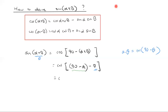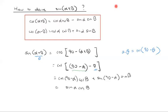This gives us cosine of 90 minus alpha, multiplied by cosine of beta, plus sine of 90 minus alpha times sine of beta. Remembering that cosine of 90 minus alpha is sine alpha, we get the result that sine of alpha plus beta equals sine alpha cos beta plus cos alpha sine beta.